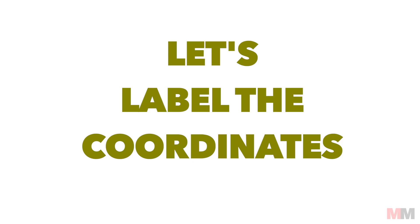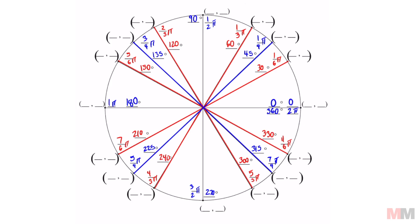Moving on to the coordinates. Let's do the easiest ones first. This first coordinate at zero degrees is just one zero. This point right here is zero one. Zero on the x-axis. One on the y. Back over here is negative one zero. And the one at the very bottom in between the third and fourth quadrant is zero negative one.